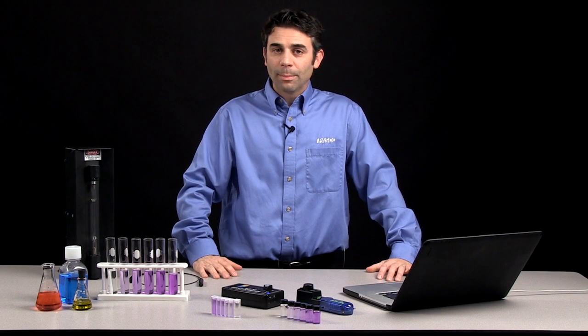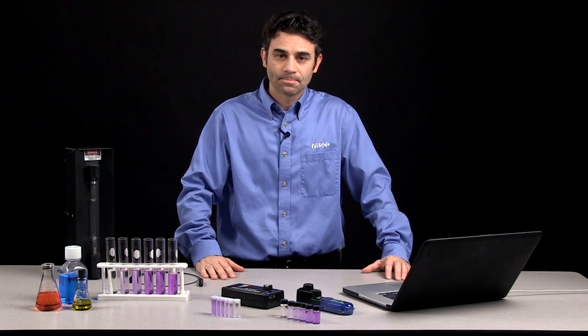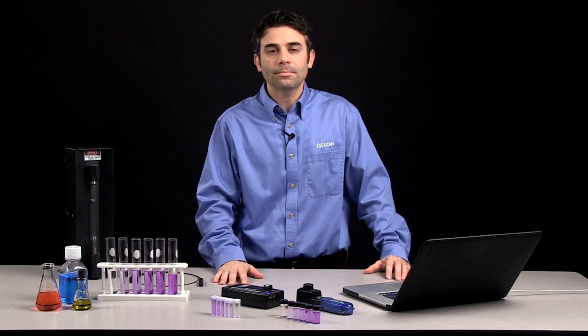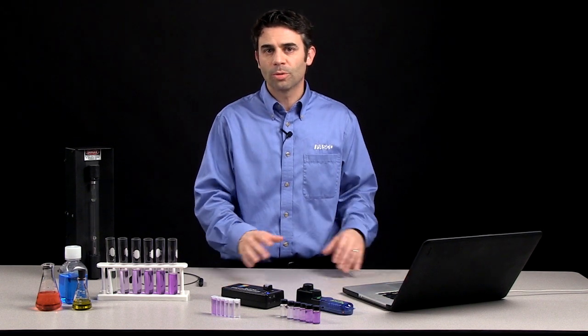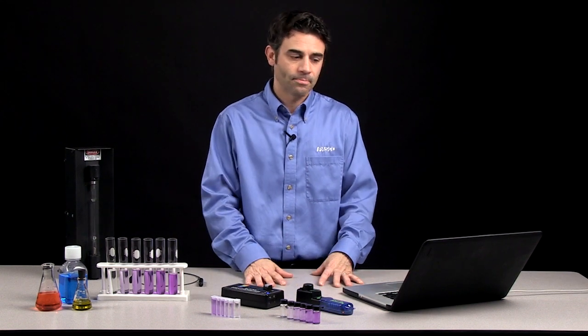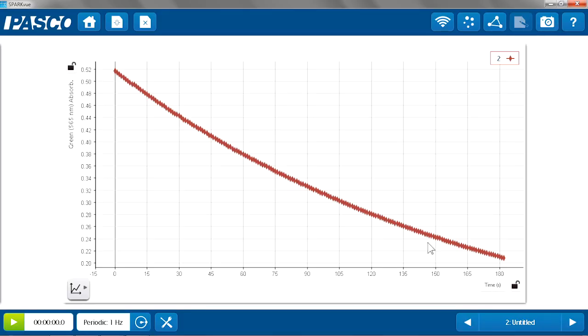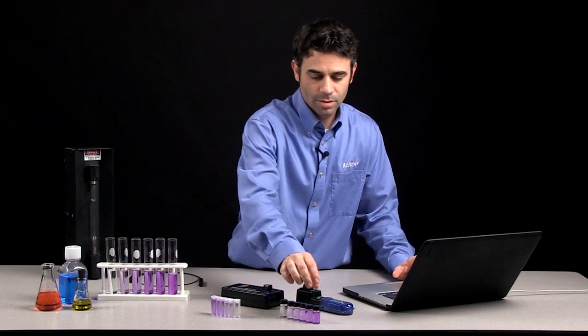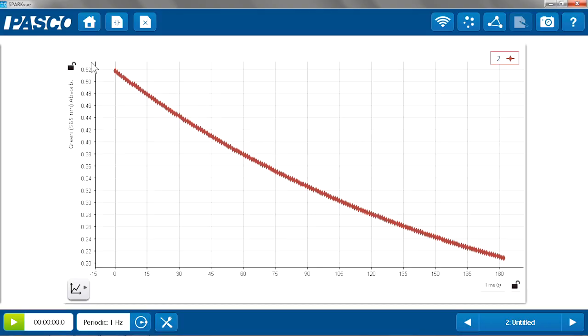So one of the other useful applications of both the colorimeter and the spectrometer is to do some kinetic studies. So in this case, again, I used my crystal violet, and I reacted it with some sodium hydroxide in order to determine the rate law and order of the reactant of the crystal violet. So in the case of the colorimeter, using SparkView software again, I have a green absorbance versus time page set up. And I simply added some sodium hydroxide to the crystal violet, put it in, started collecting data, and allowed this graph to populate.